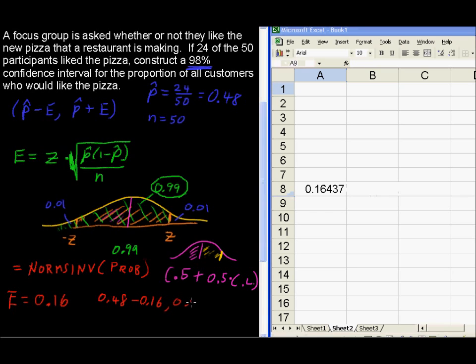So, in the end, 0.48 minus 0.16 equals 0.32, and 0.48 plus 0.16 gives you 0.64. I should be able to do that.